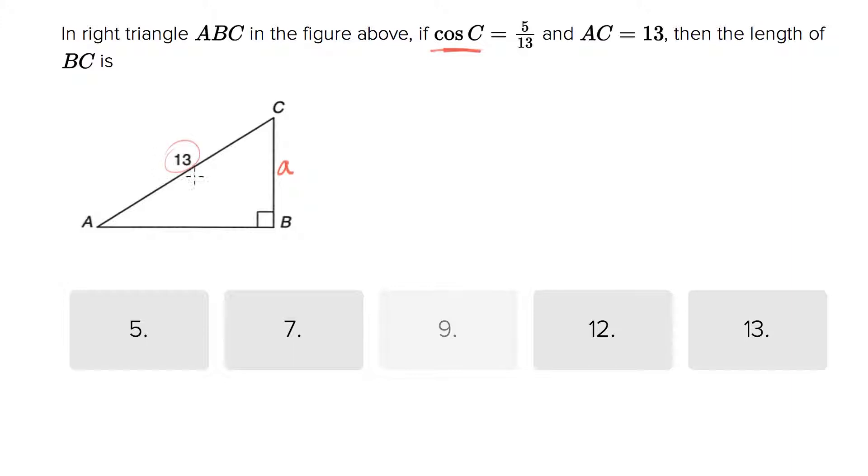Over the big side which we know is 13. So cosine C is equal to a over 13, but they're telling us that it's equal to 5 over 13, which means that a must equal 5.